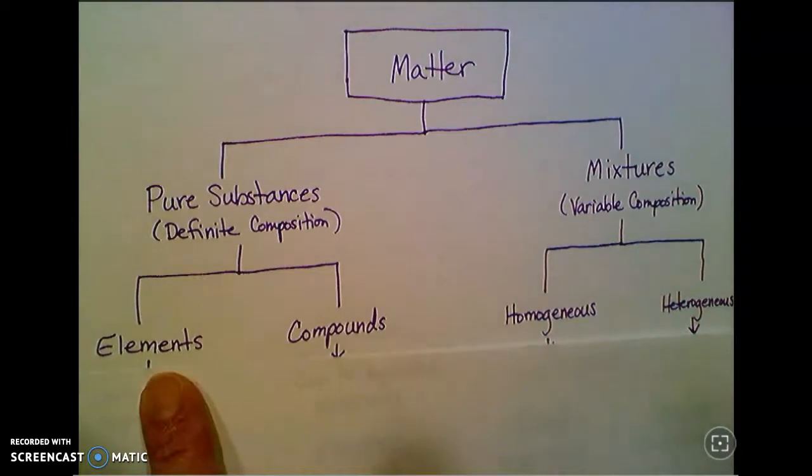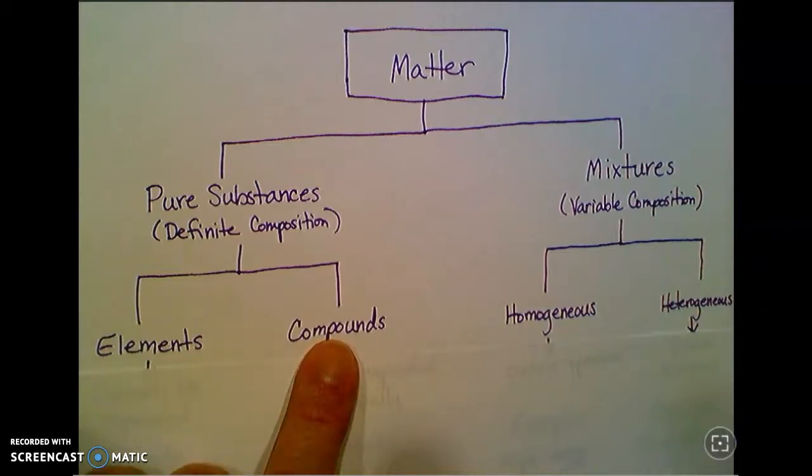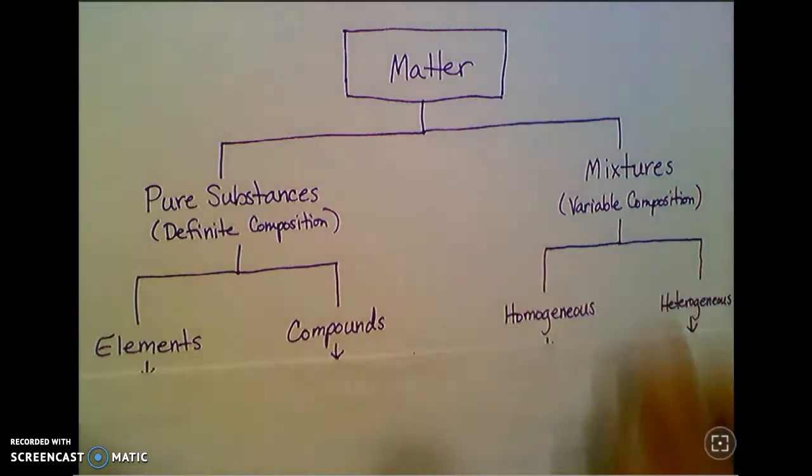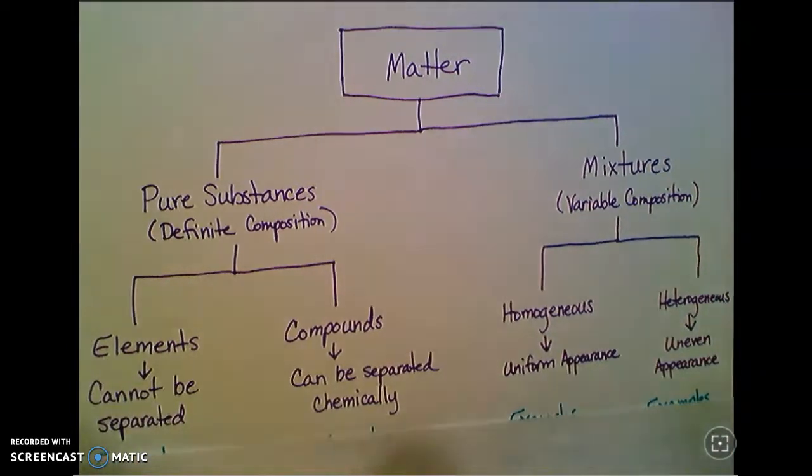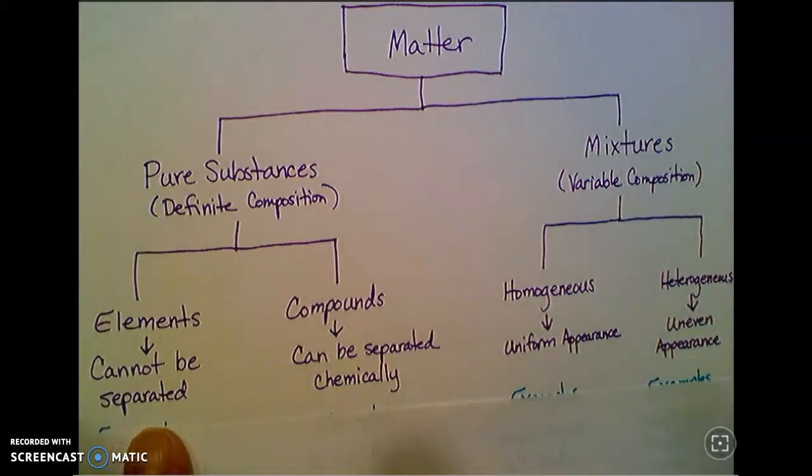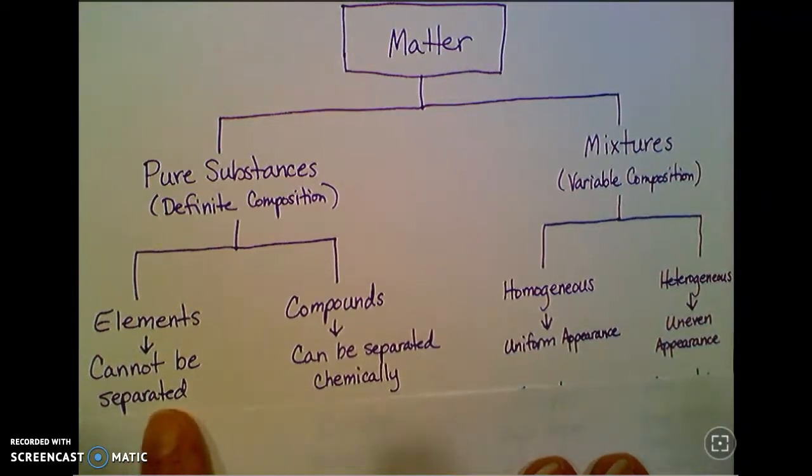Pure substances are further divided into two categories: elements or compounds. Let's focus on this side of the chart for a bit. Elements cannot be separated into anything simpler. They are the simplest types of substances that there are. It's one type of atom that makes up an element.